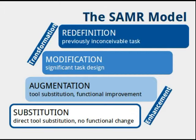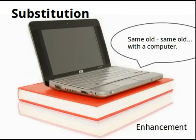Let's get started with substitution. Substitution involves the direct replacement of one technology for another. We'll begin by demonstrating how traditional maps can be replaced by Google Earth and how a traditional notebook and pencil can be replaced by Google Docs. In each of these scenarios, the original task has not been modified. We've simply substituted one technology for another.